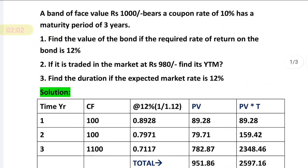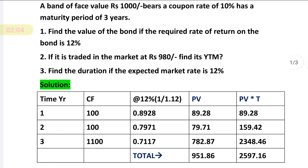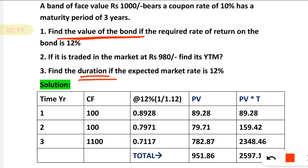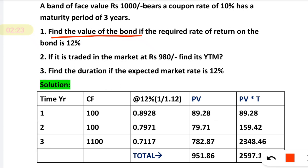Now see how to solve — it is very important to understand how to solve such problems. Remember the steps: first find the present value. Once you are able to find the present value of the bond, you will automatically and easily calculate the duration of the bond. So first, find the present value of the bond. The duration is three years, meaning coupon is payable annually — nothing mentioned about half-yearly or quarterly, so we assume annually.